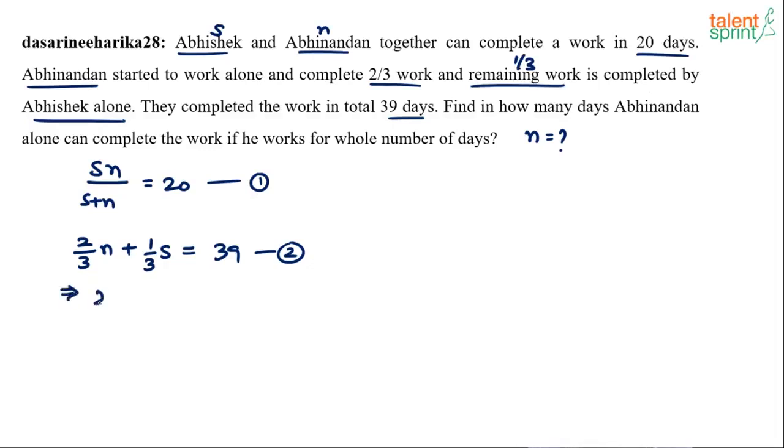So what do we actually get from this equation? We can say 2N plus S equals to 39 times 3. 3 is a common denominator. So 2N plus S equals to 39 into 3 which is 117. 2N plus S equals to 117. From this we get S equals to 117 minus 2N. Just put that back in the first equation.